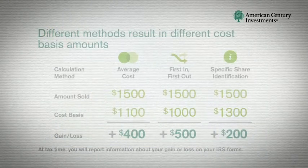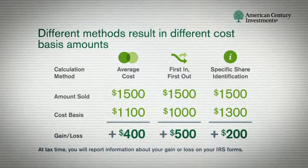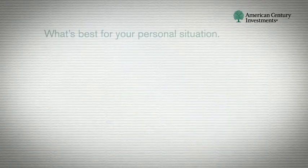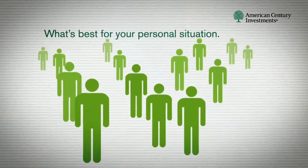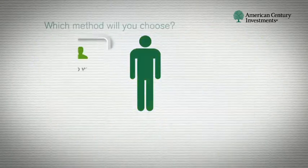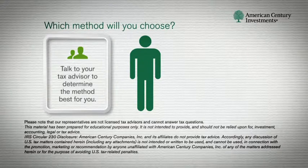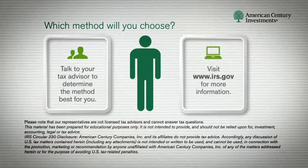Now that we've done the math, you can see how the method used affects your cost basis and your potential capital gain or loss. Remember, these outcomes are based on the simplified scenarios previously shown. Your cost basis and gain or loss will be determined by the actual transactions in your account. The method you choose should reflect what is best for your personal situation, as determined by you and your tax advisor. Choosing a method is an important decision, so it's worth more time to investigate. Visit IRS.gov for more information.